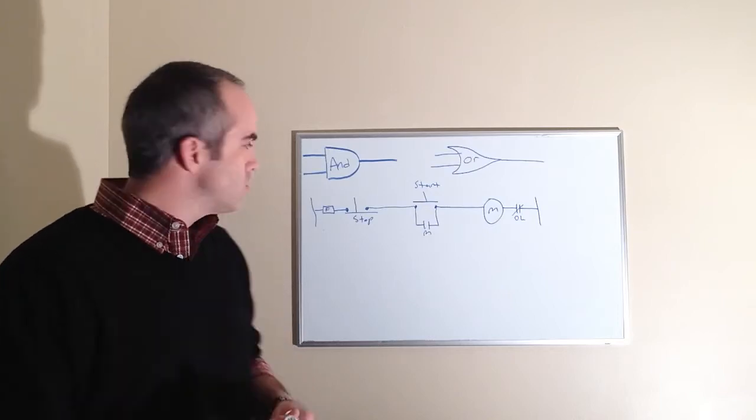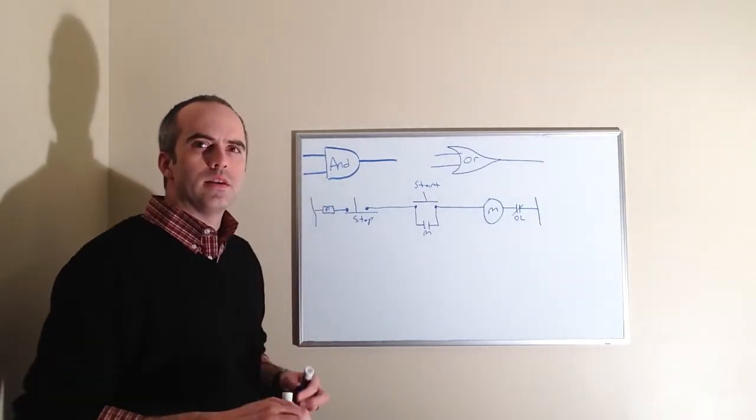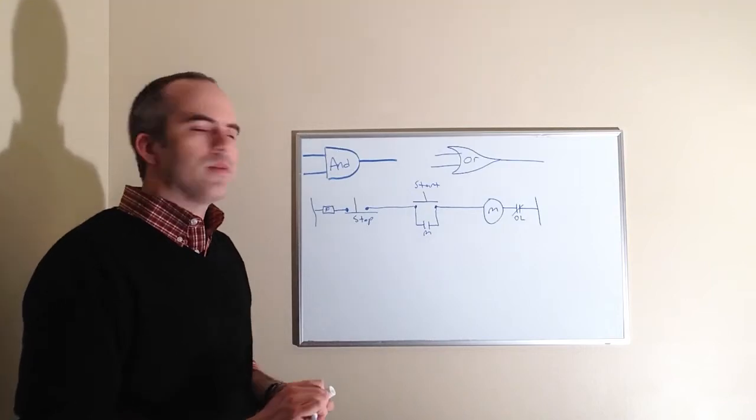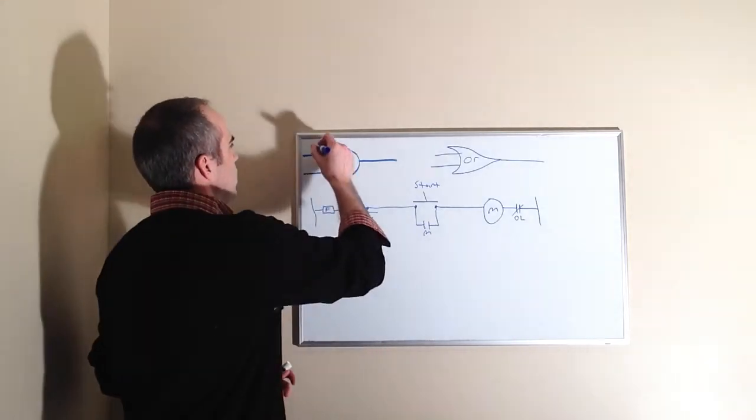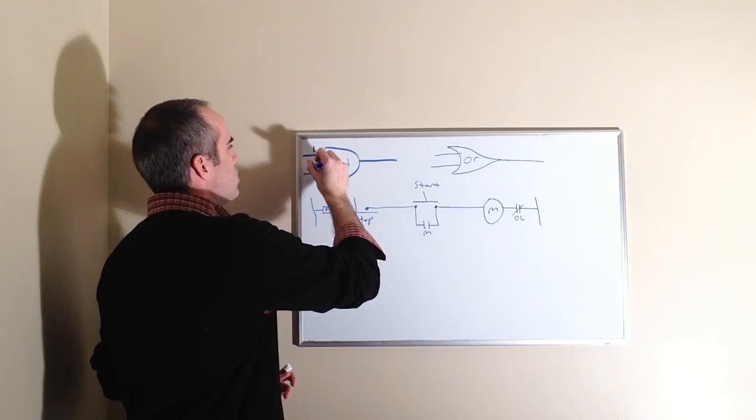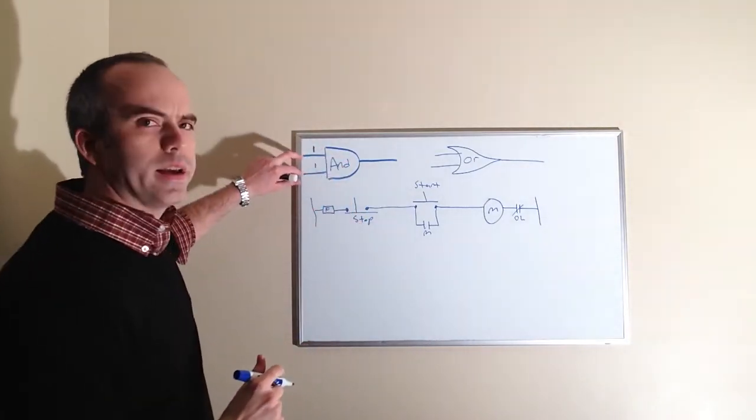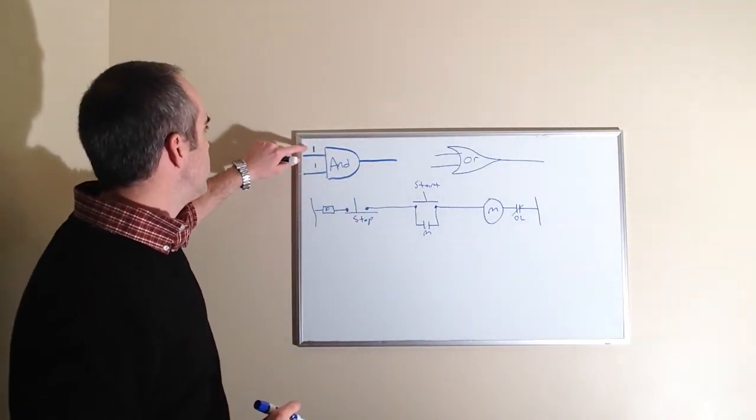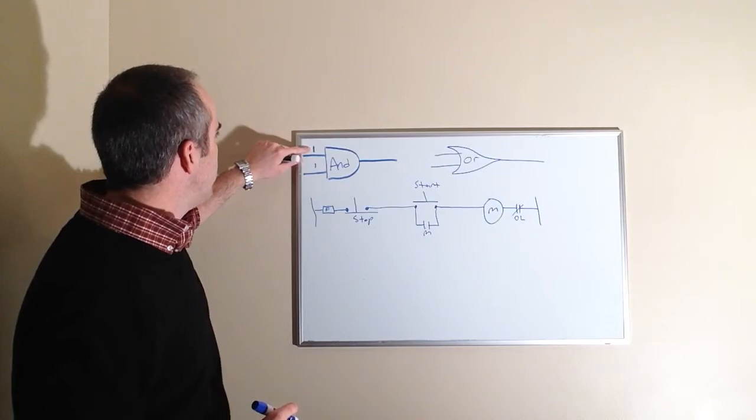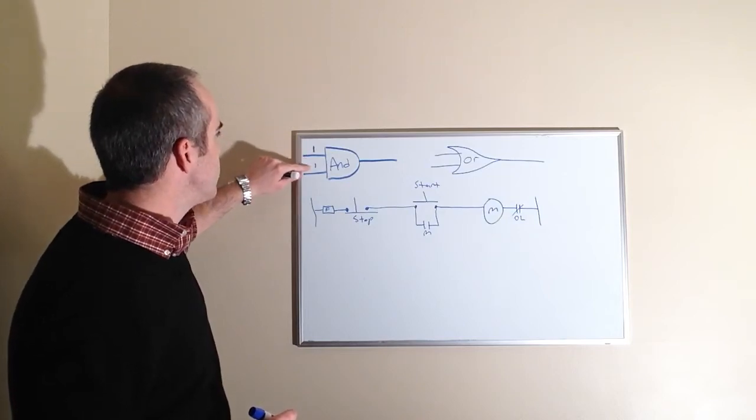So starting with the AND gate, what an AND gate does is it'll have a series of inputs. Let's say that we have an input that is on, one and one. This particular AND gate has two inputs.